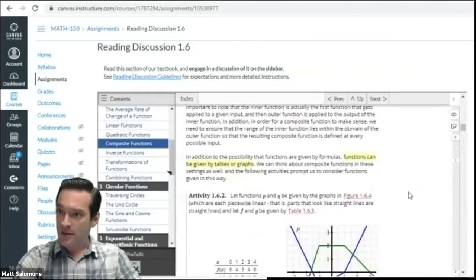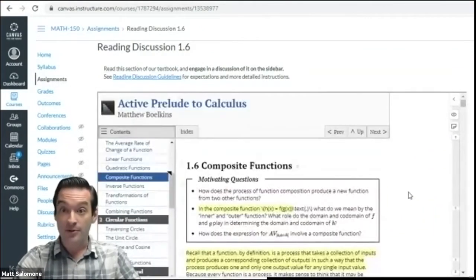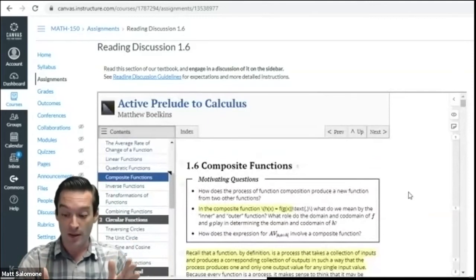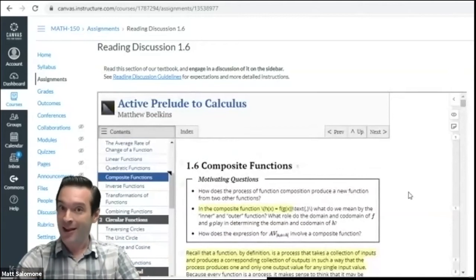So this is an example of an open text called Active Prelude to Calculus. It's part of a sort of a three-volume open educational resource written by Matt Bulkins at Grand Valley State University that I recommend anyone teaching in the calculus sequence has to check this out.